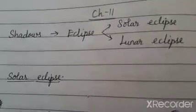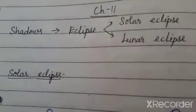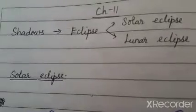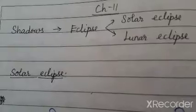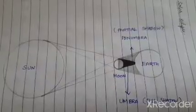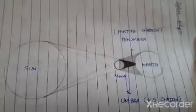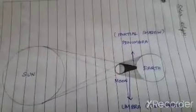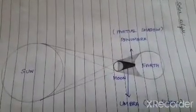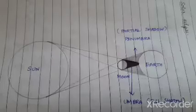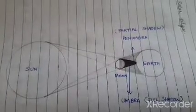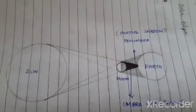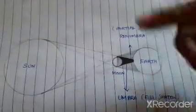Today let us see how an eclipse is formed, and when it is called a solar eclipse and when it is called a lunar eclipse. Eclipse is nothing but a kind of shadow that happens in a particular region of the earth when the sun, moon, and earth come together in a straight line. You know that the earth revolves around the sun.